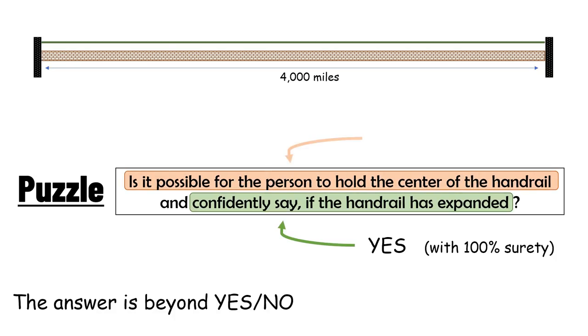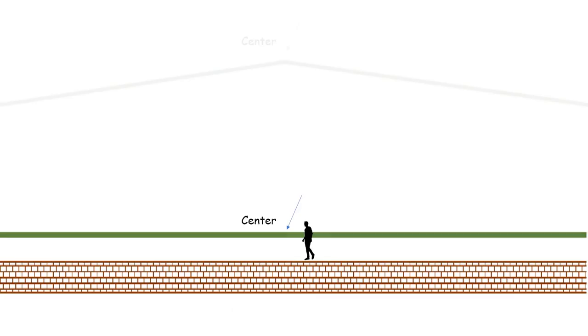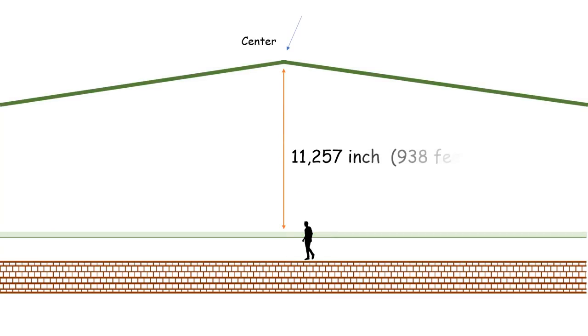The trick lies in this part of the problem. It's impossible for the pedestrian to touch the center of the handrail as the center point in summer would be located at a height of 11,257 inches above its actual origin. That means to accommodate just 1 inch of expansion, the center of the handrail has to go 11,257 inches above its previous level.